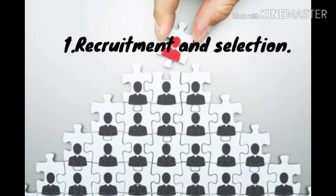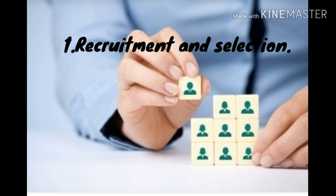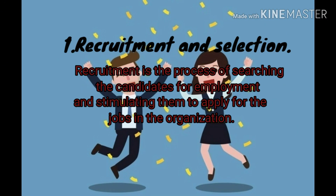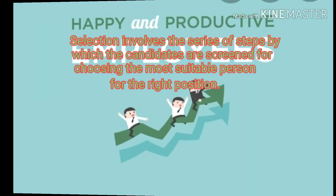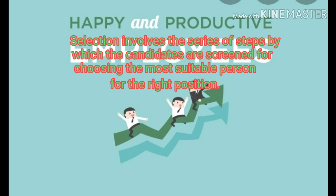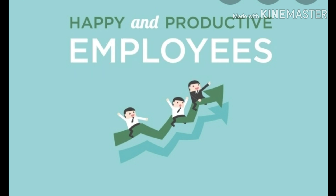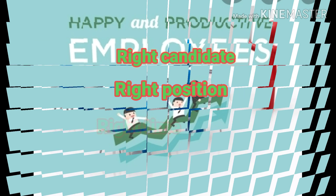The first function is recruitment and selection. Even though these words are used together, they are different in both meaning and function. Recruitment is the process of searching for candidates for employment and stimulating them to apply for jobs in the organization — searching by posting job ads, using references, approaching recruitment agencies, etc. Selection involves a series of steps by which candidates are screened to choose the most suitable person for the right position, at the right time.